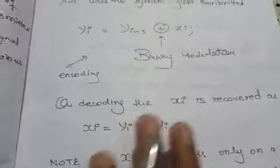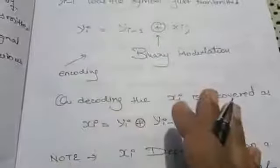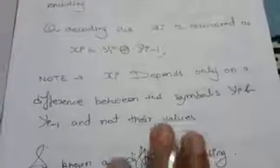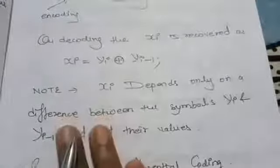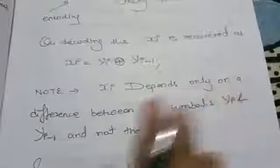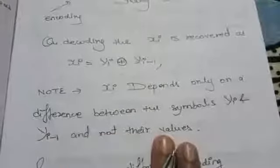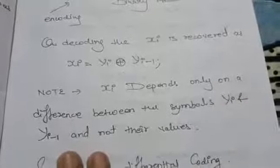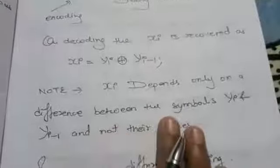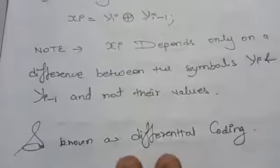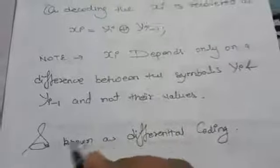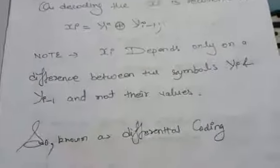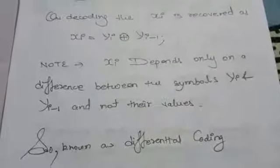This difference — between the signal you want to transmit and the previous signal value — is the key. Xi depends only on the difference between yi and yi-1, not their absolute values. This is what we call differential coding: you take the difference between the current signal and the previous signal.